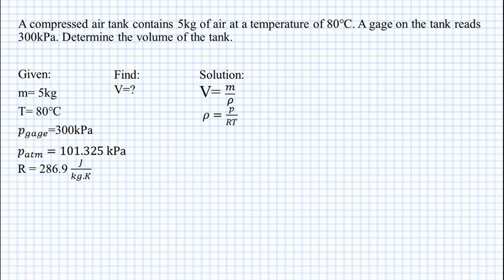Density equals pressure over gas constant R multiplied by T which is temperature. Since we have a pressure gauge equals to 300 kilopascals, we add the atmospheric pressure which is 101.325 to get the value of the pressure. And the sum will be multiplied by 10 raised to the power of 3 newton per meter squared. And we have a value of 401,325 newton per meter squared.